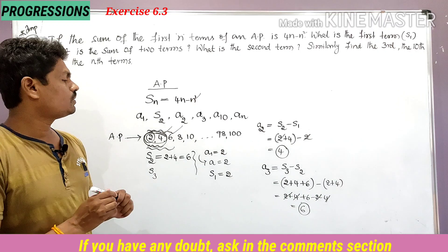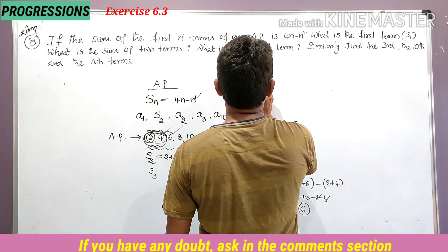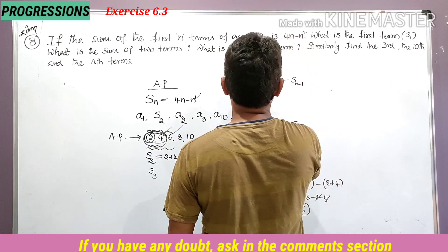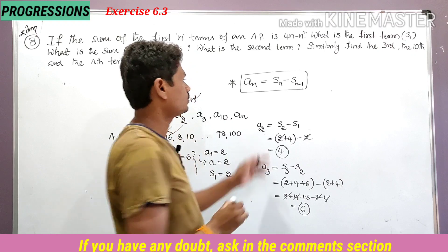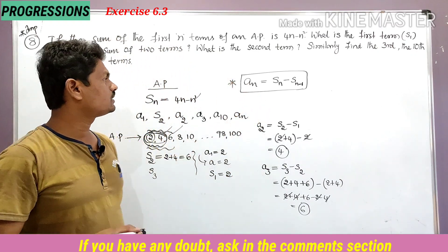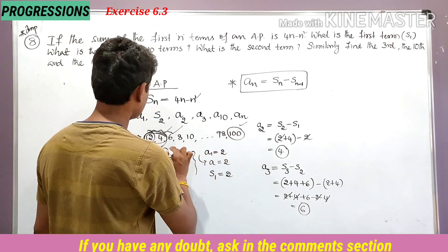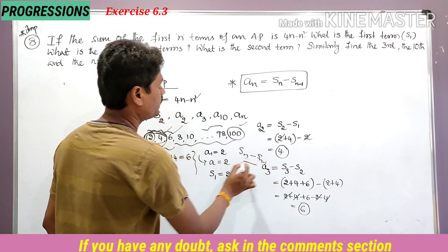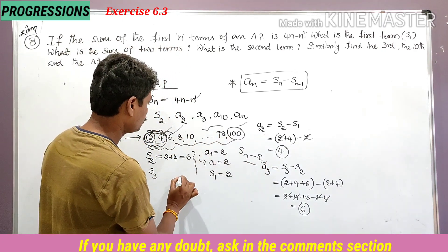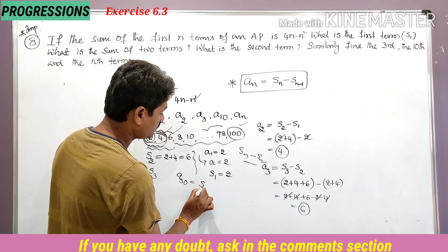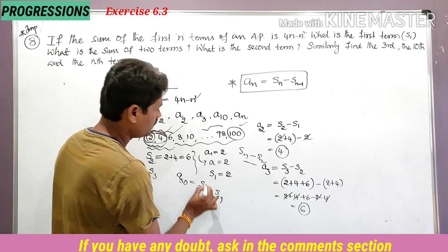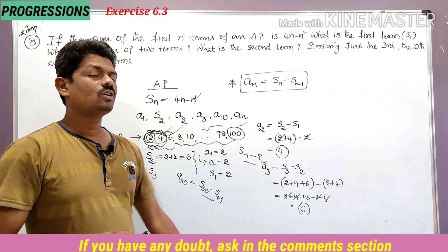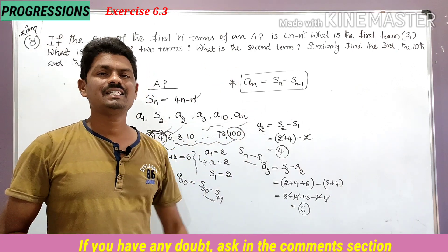You must remember this formula: the nth term an = Sn − S(n−1). So the last term equals the sum of all n terms minus the sum of the first n−1 terms. For example, a50 = S50 − S49, where S50 is the sum of all 50 terms and S49 is the sum of the first 49 terms.